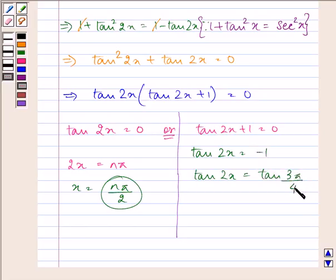Hence, 2x = 3π/4, or x can be written as 3π/8.